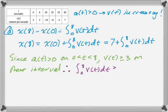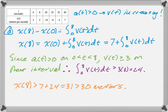So, the integral from 0 to 8 must be greater than, you know, if it was a constant of 3. So, it's got to be greater than 3 times 8, which is 24. And, so, x(8) is greater than 7 plus 24, which is 31, which is greater than 30 meters.